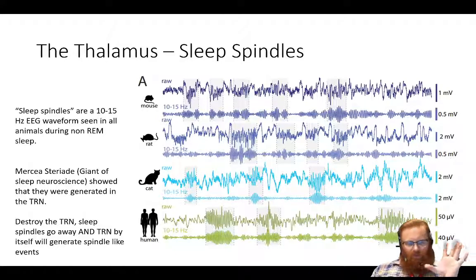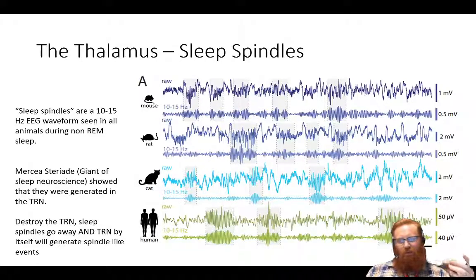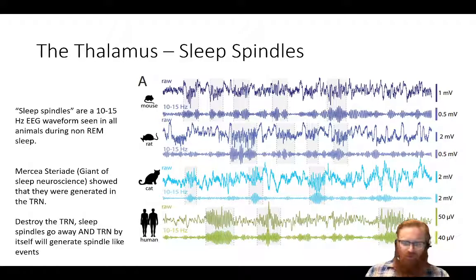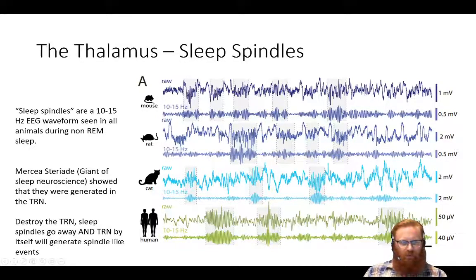This may seem a little off base, but bear with me. There are these things called sleep spindles — very pronounced EEG waveforms seen in non-REM sleep. We see them in mice, rats, cats, humans — basically every mammal produces them. This is a raw sleep waveform; if you filter to reveal signals between 10 to 15 Hz, you see these sleep spindles appearing essentially everywhere.